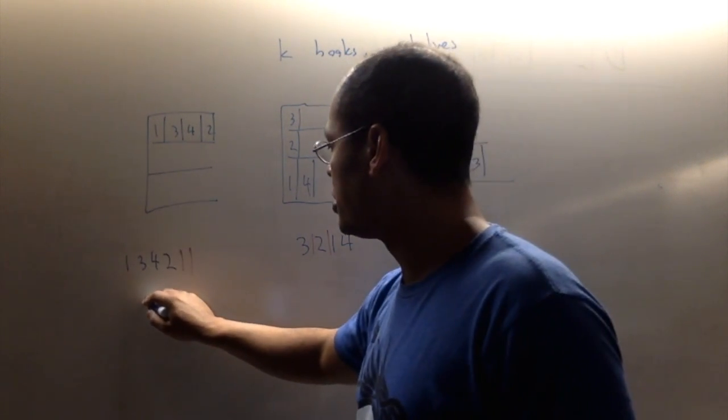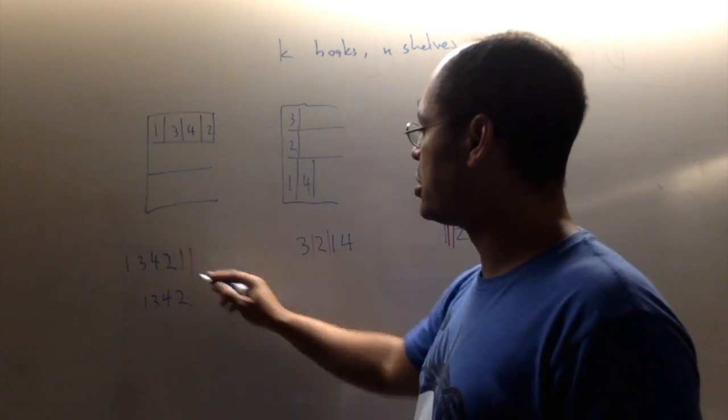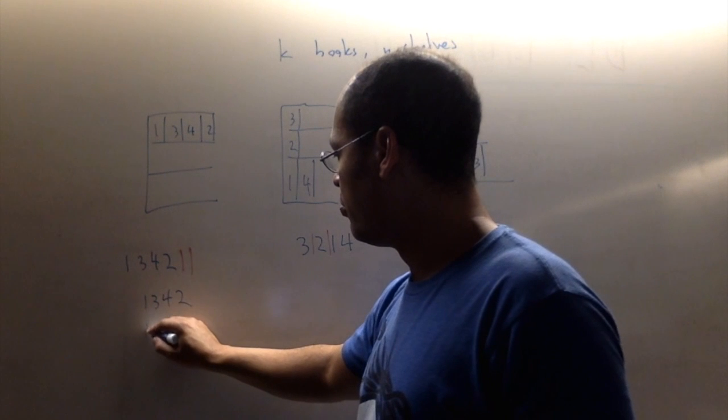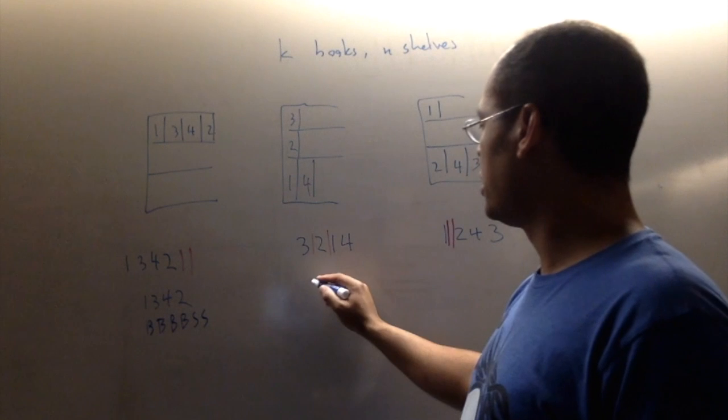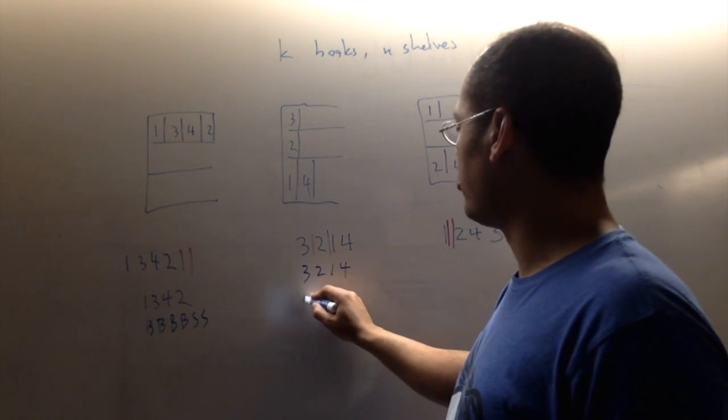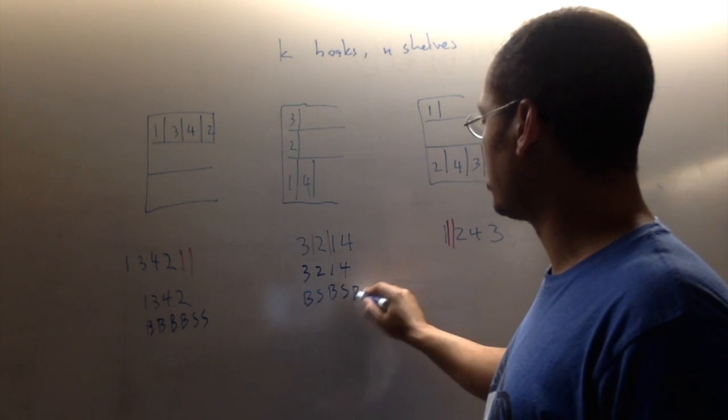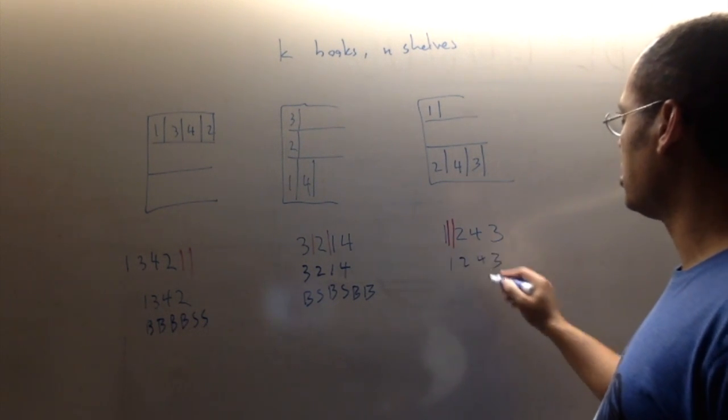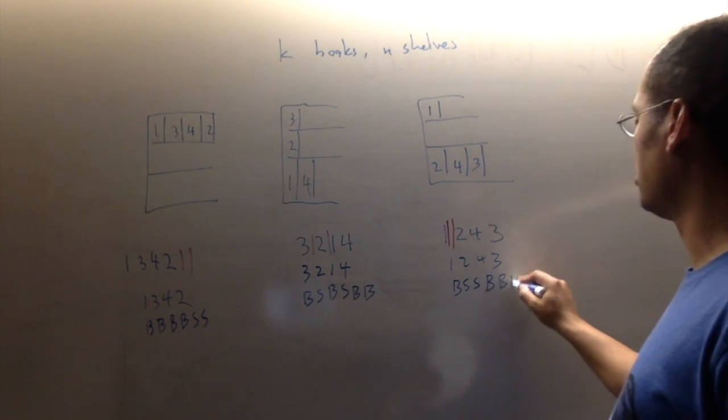So I have the permutation one, three, four, two. And then I have a description of where the shelves are, which are like this. I'll say it like this. I have book, book, book, book, shelf, shelf. Here I have three, two, one, four, and I have book, shelf, book, shelf, book, book. Here I have one, two, four, three, and I have book, shelf, shelf, book, book, book.